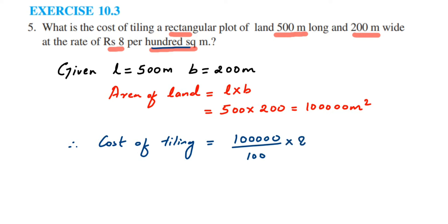I hope you understood why I am dividing here, because they are charging per 100 meter square. Means for 100 meter square it is 8 rupees. So I don't know how many hundreds are there in this. That is why we are dividing here with 100 and then multiplying with 8.